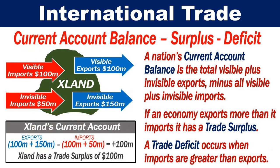A nation's current account balance is the total visible plus invisible exports minus all visible plus invisible imports. If an economy exports more than it imports, it has a trade surplus. On the other hand, if an economy's imports are greater than its exports, then it has a trade deficit.